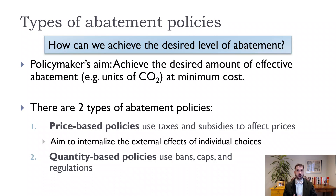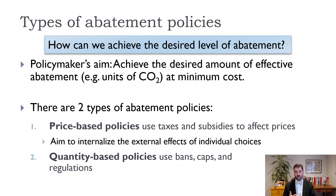That tax would filter through to gasoline, to beef, to energy, and it would provide an incentive for the market to come up with alternatives. It would provide an incentive for people to drive less, to drive more fuel-efficient cars, to drive electric cars, and to eat less meat. All of that would be captured as long as the tax was set at the right amount.